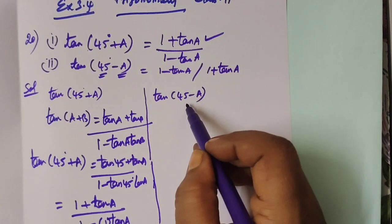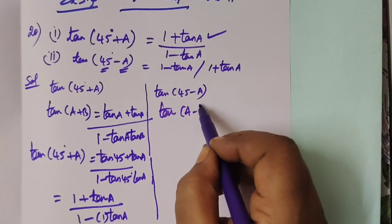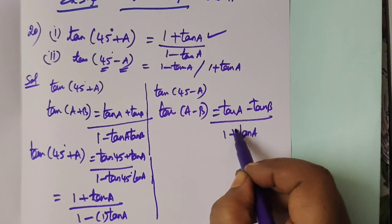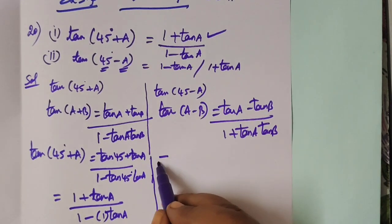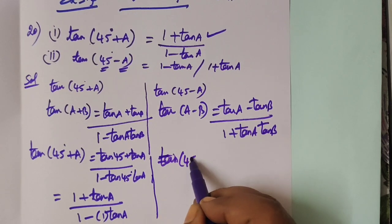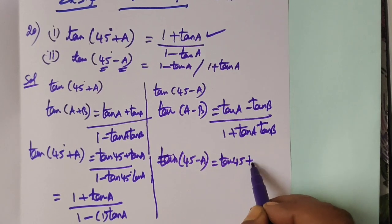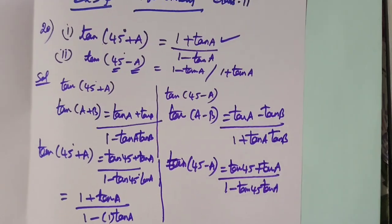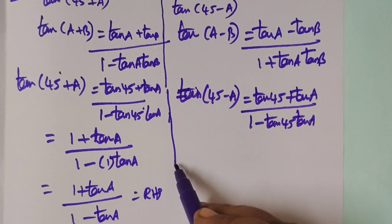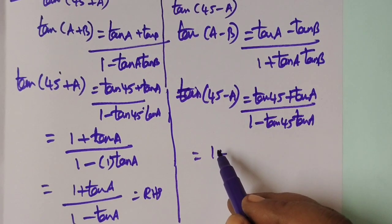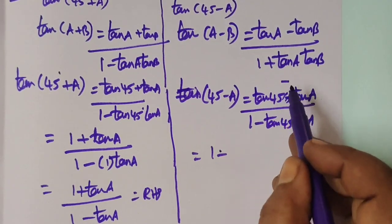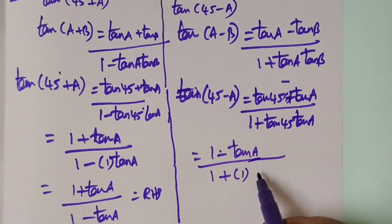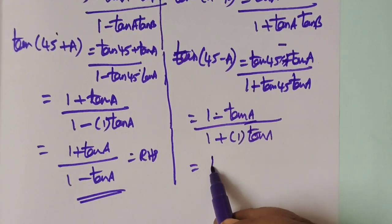Similarly, the same type but instead of plus, we have minus. So the formula tan(a - b) = (tan a - tan b) / (1 + tan a · tan b). That gives tan(45 - a) = (tan 45 - tan a) / (1 + tan 45 · tan a), which equals (1 - tan a) / (1 + tan a).